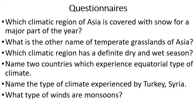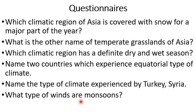Now, children, I have some questions for you. First: which climatic region of Asia is covered with snow for a major part of the year? Second: what is the other name of temperate grasslands of Asia? Third: which climatic region has a definite dry and a wet season? Fourth: name two countries which experience equatorial type of climate. Fifth: name the type of climate experienced by Turkey and Syria. Sixth: what type of winds are monsoons? You will write these answers and we will discuss them. Thank you very much.